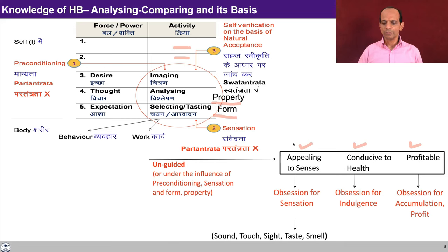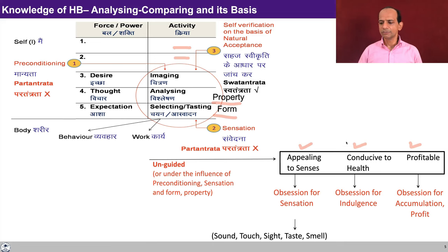In this unguided state, the activity of comparing has three bases. One is appealing to senses, the second is conducive to health, and the third is whether the choice is profitable or not. These are three bases of comparing at the level of thought when the thought is unguided. If something is appealing to the senses, we may prefer it; if something is conducive to health and largely for consumption, we may go for it; and if something is profitable in exchange, we again go for it. In Hindi, these can be called Priya, Hit and Labh — Priya being appealing to senses, Hit being conducive to health or consumption, and Labh being profitable in exchange.